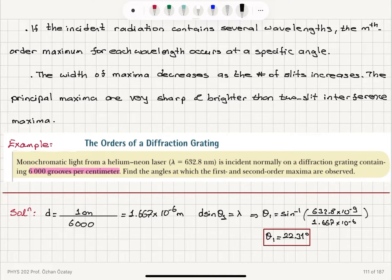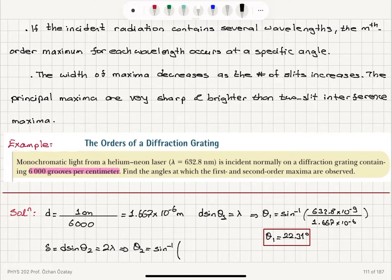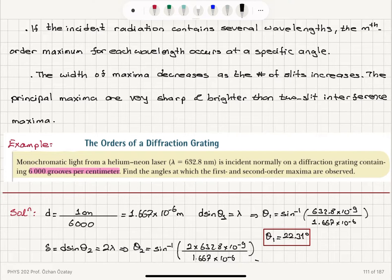For the second order maximum (M = 2), the path difference D sinθ₂ = 2λ. So θ₂ = sin⁻¹(2 × 632.8 × 10⁻⁹ m / 1.667 × 10⁻⁶ m), which gives θ₂ = 49.41 degrees.